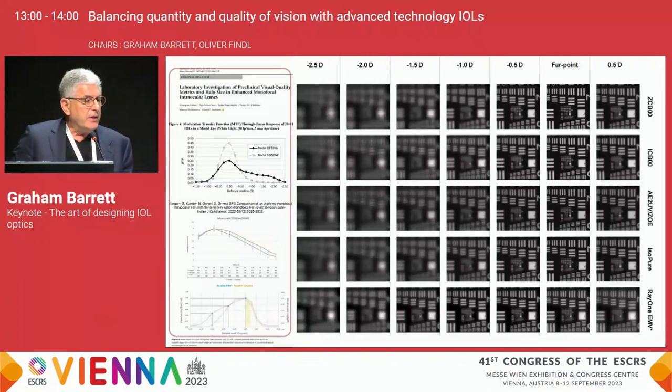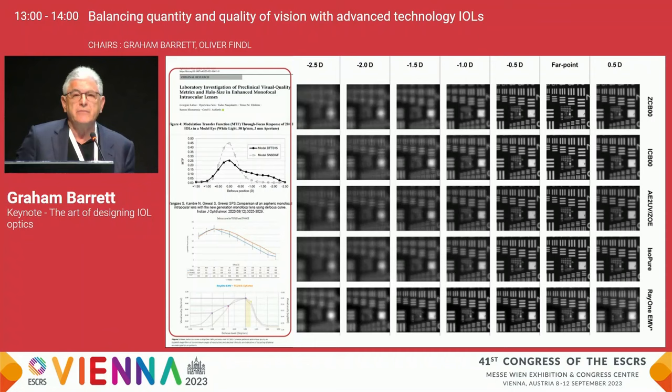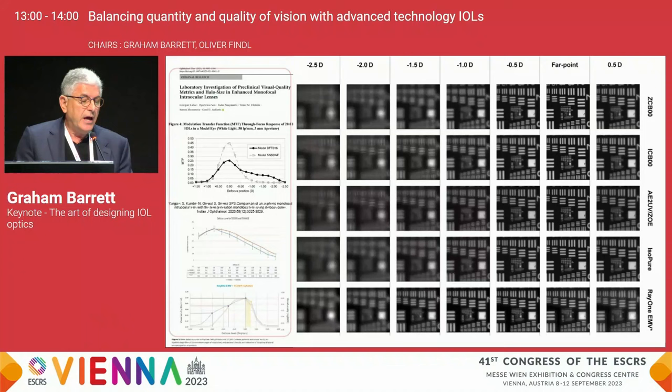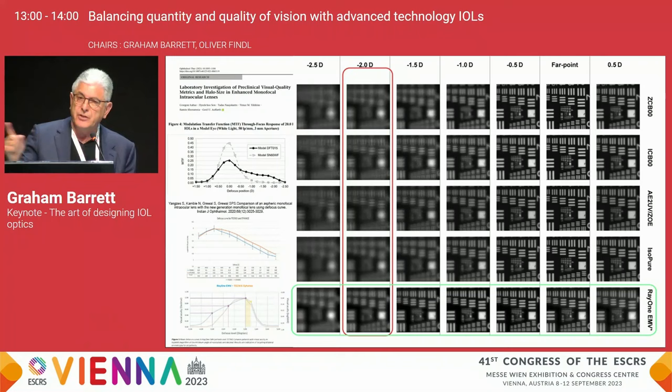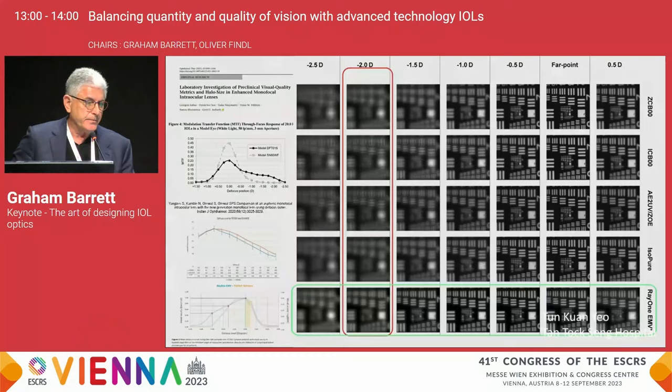This data published by Gerd Auffarth recently shows a comparison of resolution targets. If you want to have predictable near vision, you need to combine some degree of modest monovision or myopia to provide additional reading. With the Rayner EMV, using this principle because it's been optimized for combining with a level of myopic defocus, you have a range of clear vision from distance, intermediate, and near.